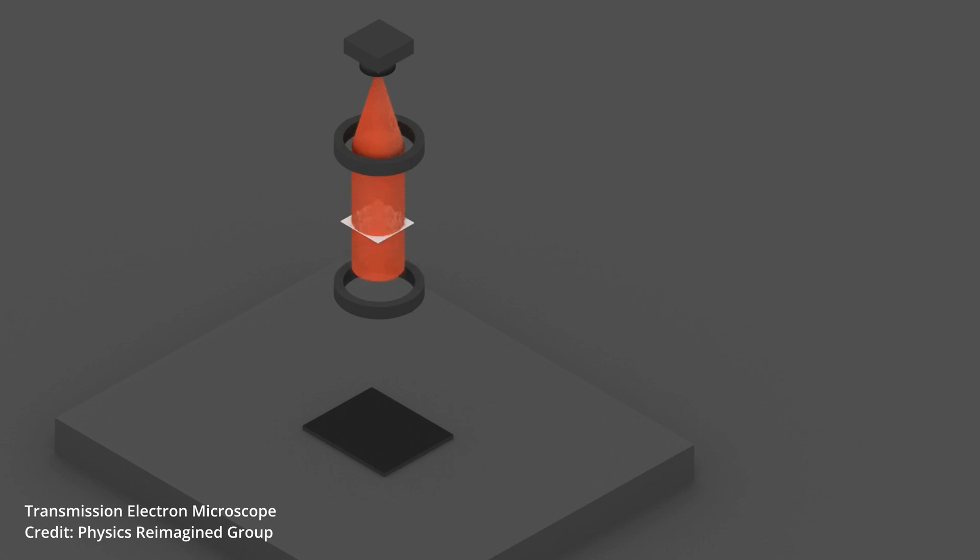In order to get electrons to pass through the sample, the sample must be very thin, on the order of a few tens of micrometers.